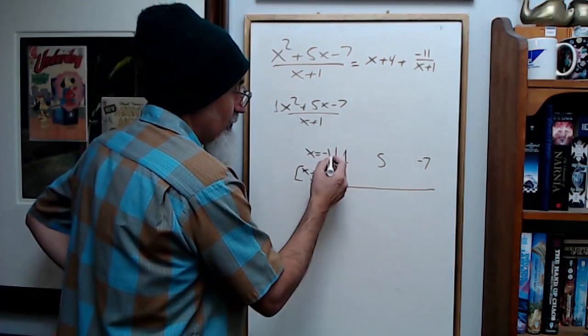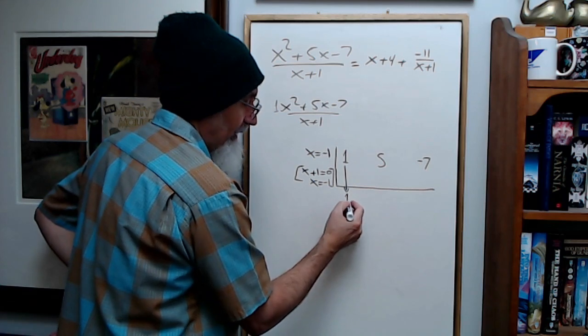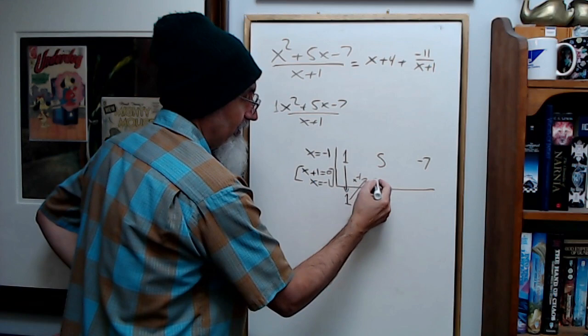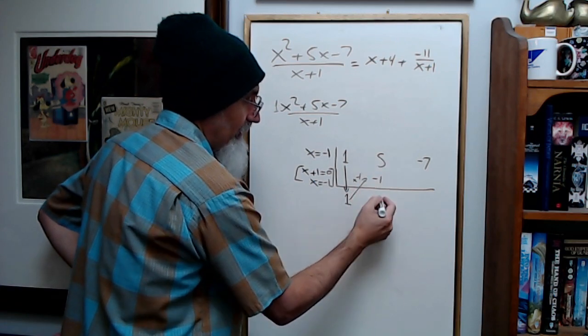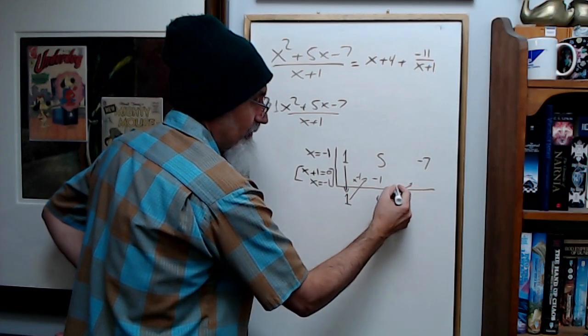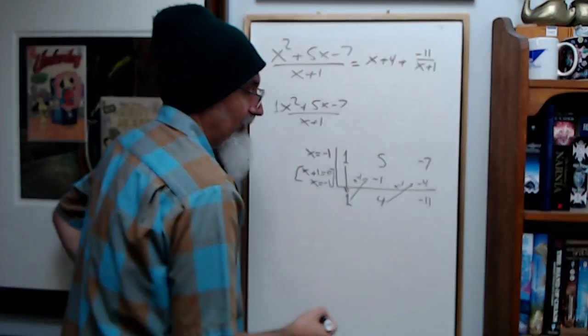The way you do synthetic division: your first order is to bring this guy down and multiply this by this. 1 times negative 1 is negative 1. Add these up, you get 4. Bring this here, multiply by negative 1, becomes negative 4. Add these guys up, you get negative 11.